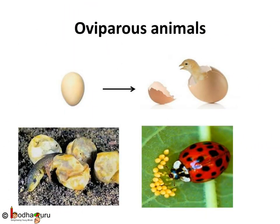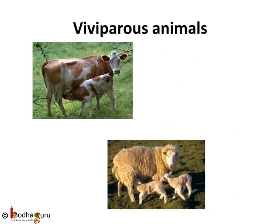Animals such as hen, frog, lizard, and butterfly, which lay eggs, are called oviparous animals. On the other hand, animals such as human beings, cows, sheep, and dogs that give birth to young ones are called viviparous animals. So you can say mammals are viviparous animals.